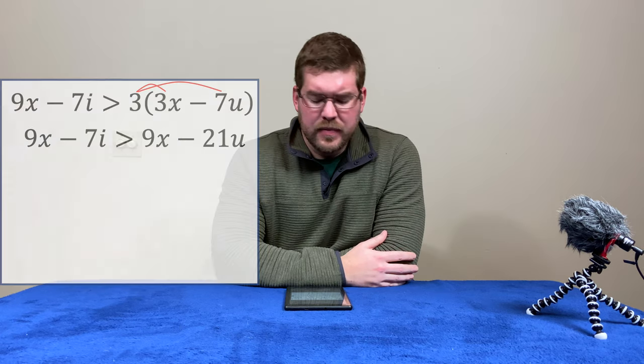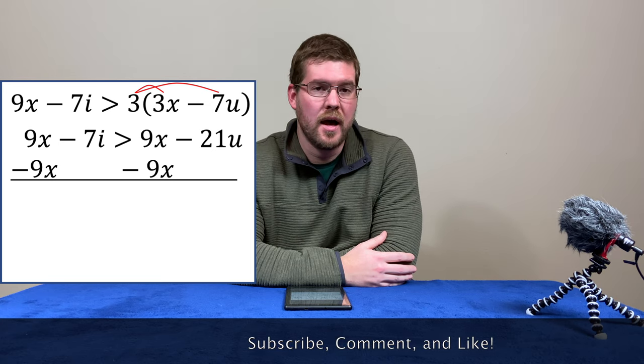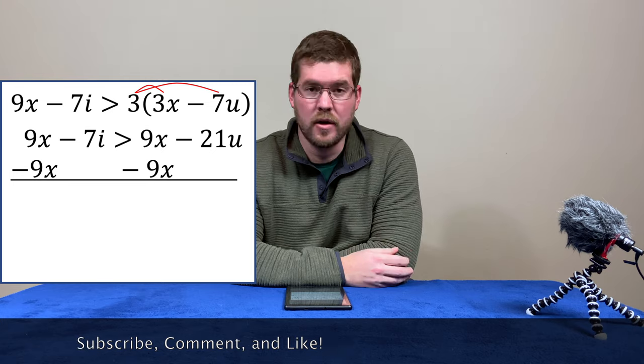From there, we subtract 9x to both sides. That will eliminate the 9x on both sides of the inequality.